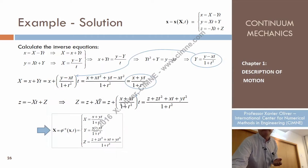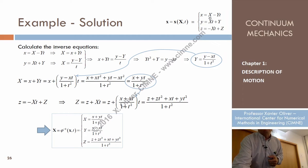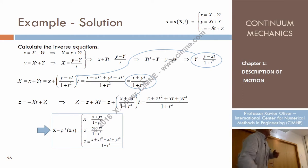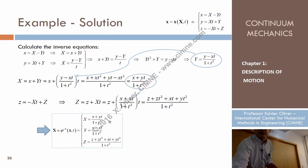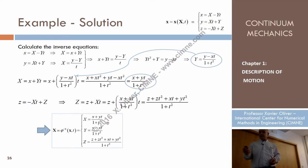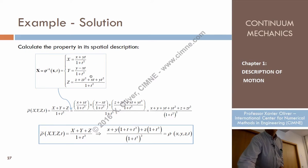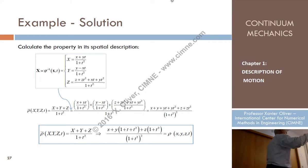There is some procedure for that. First, you obtain the inverse equations of motion. We isolate from the equations of motion — we have a system of three equations with three unknowns, the unknowns being capital X, Y, and Z — and we want to solve for the three unknowns. This is possible because the Jacobian is different from zero, and finally we find that the inverse equations of motion are these ones.